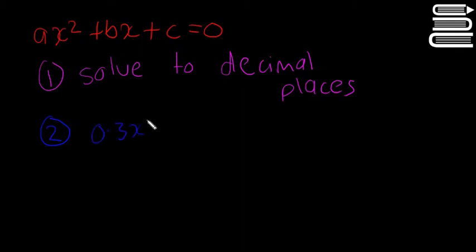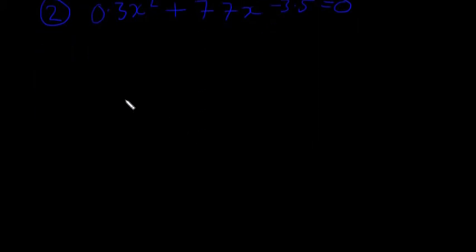The second time is if the question itself looks like 0.3x squared plus 7.7x minus 3.5 equals zero. So whatever you have, as long as there are decimal places in it, it means straight away you won't be able to do it by factorization, so you have to use the formula.